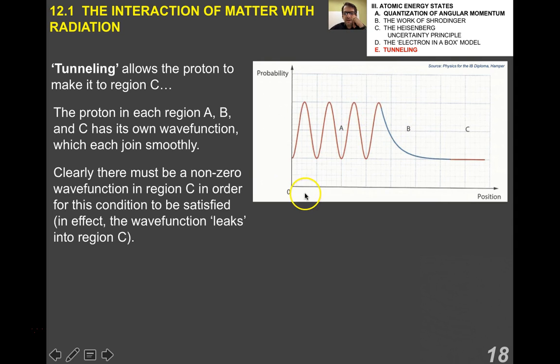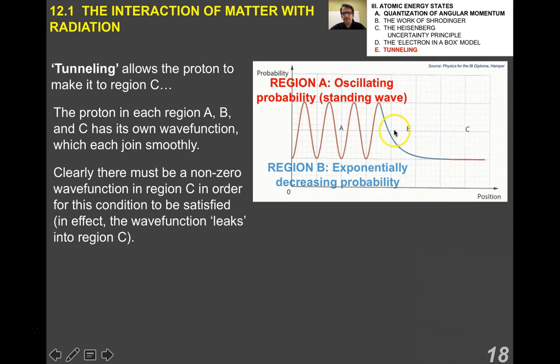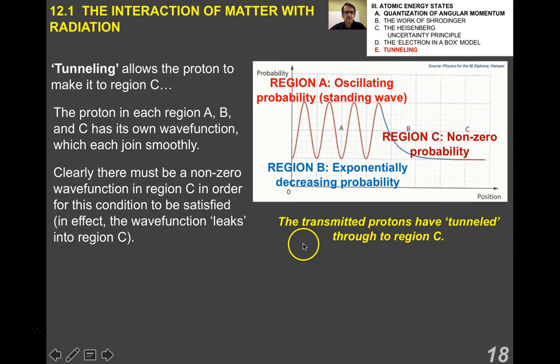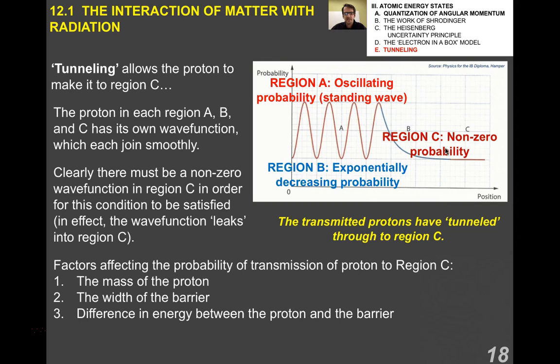It turns out that on quantum scales, there is a probability that the proton could make it to region C and the reason is because the proton in each region has its own wave function. A particle could have different wave functions depending on what state it's in or where it is. The proton would have a different wave function in each region A, B, and C. Those wave functions have to join smoothly. They are continuous functions, these probability functions. Clearly, you can see from the diagram, there's a non-zero wave function in region C in order for it to be continuous with what it's doing in B. In fact, in region B, the probability is an exponential decay. In region A, it's an oscillating probability, but in region C, it's small, but it's not non-zero. In effect, the wave function leaks into region C and if there's a non-zero probability wave function in a region, it means there's a possibility, however small, that that proton could end up in that region. In this case, we say that the transmitted protons have tunneled through to region C. There are a couple of factors affecting the probability of whether this would happen or not: the mass of the proton, the width of the barrier, and the difference in energy between the proton and the barrier. The larger each of these quantities is, the less likely the proton will tunnel into region C. And that wraps up quantum mechanics and tunneling.